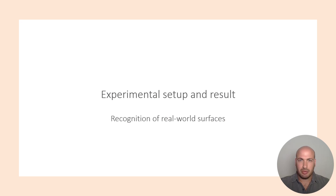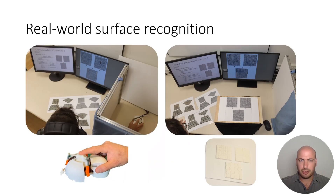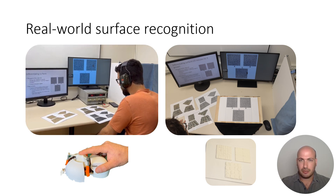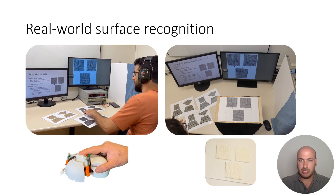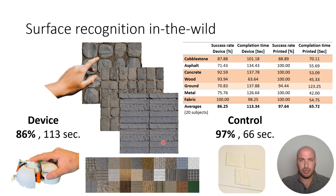Let's move on to the experimental setup and validation results for the device. An extensive set of experiments was conducted to validate the performance of the device. I will focus on the real-world surface recognition task, as this was the main focus of our research. We used PPO materials based on 3D scans of actual surfaces, with 10 categories of 3 similar surfaces each. The users were asked to match the sensed surfaces to corresponding images in two testing conditions: touching the digital surfaces using the device, and a control setup where users touched the surface with their actual hand. In both conditions, the surfaces were covered so that no visual information was given. An example group of surfaces is shown here, and all groups are shown at the bottom.